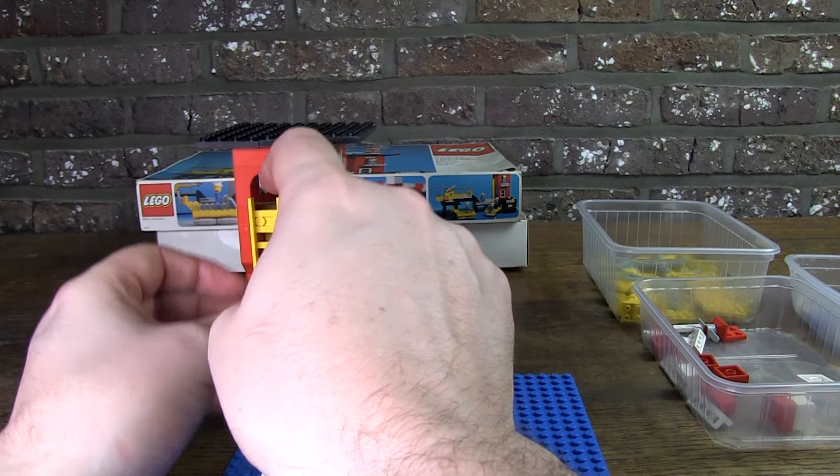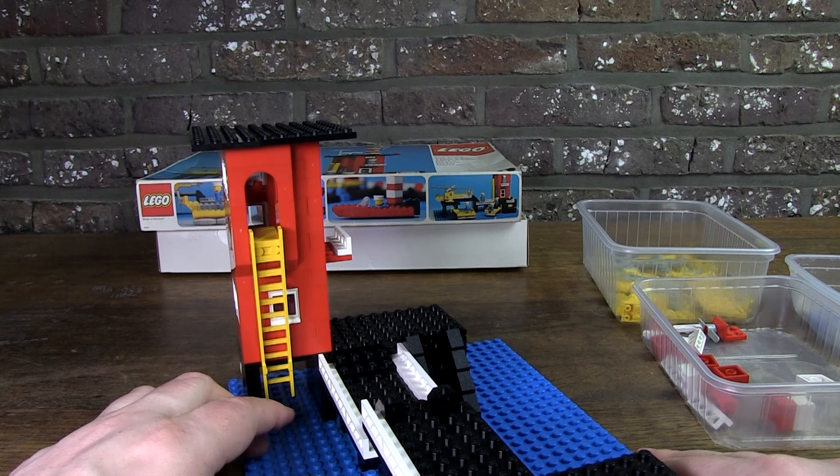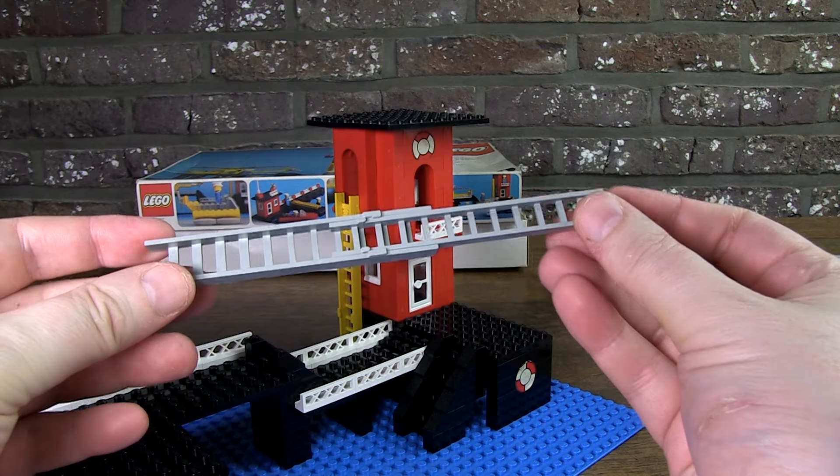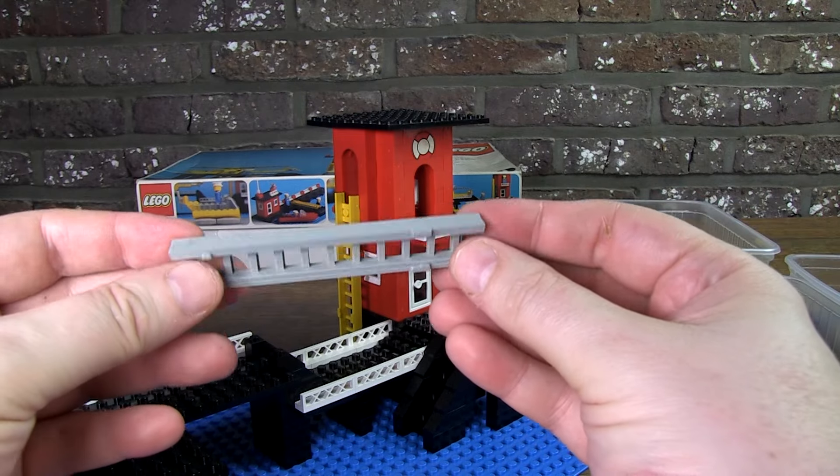The ladder is a cool feature, but it's a pity that it's only a half one. You can also find such a ladder in fire station set 374. It's the same ladder, but in two pieces.